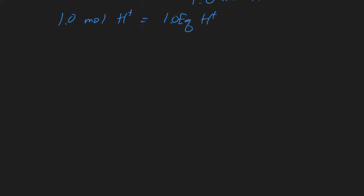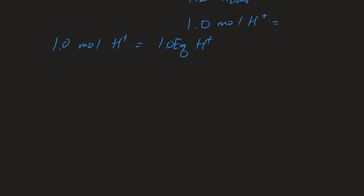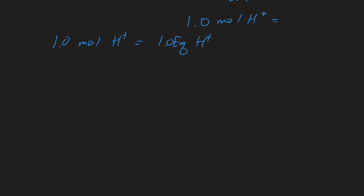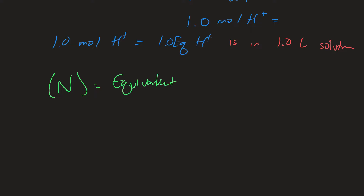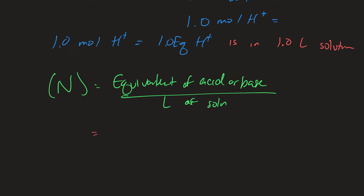Assuming this solution is in 1.0 liters, we calculate normality as equivalents of acid or base divided by liters of solution. So normality equals 1.0 eq of H⁺ divided by 1.0 liters of solution, giving us 1.0 normality — that is the concentration in equivalents per liter.